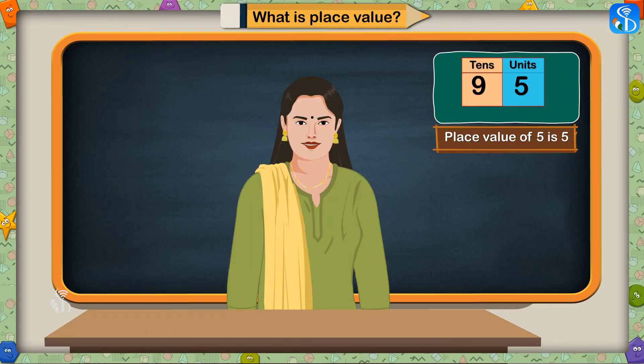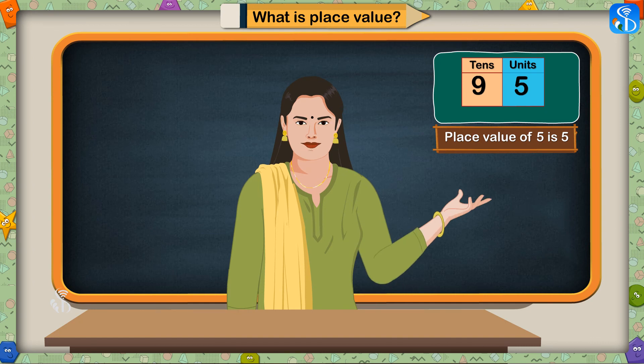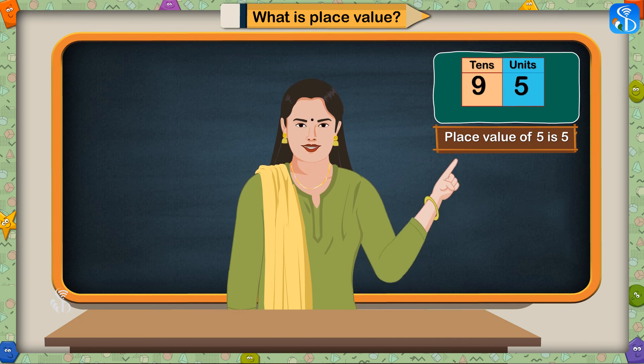Very good. This means that you have now understood how to recognize the place value of both the digits in a number very well.